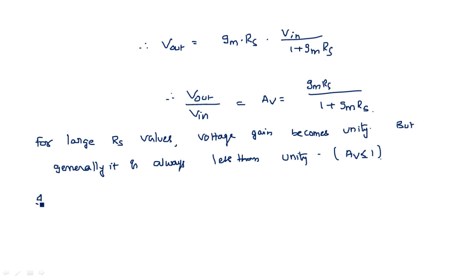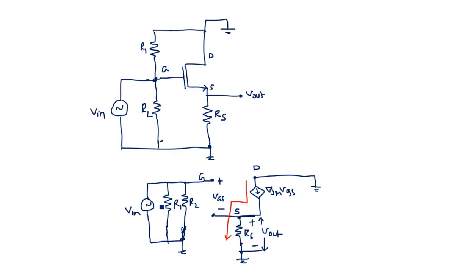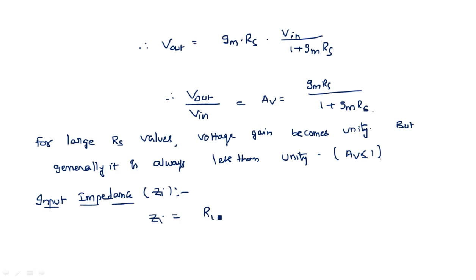Coming to the input impedance Zi. Looking at the circuit diagram, Zi is calculated from the gate to ground. We have R1 and R2 both connected from gate to ground in parallel. Therefore, Zi equals R1 parallel R2, which equals R1 times R2 divided by (R1 plus R2). This is the input impedance expression.